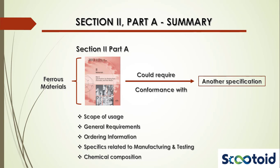Let's quickly summarize what we've learned so far. Part A of Section 2 covers specifications for ferrous materials. A specification in Part A could require conformance with another specification elsewhere. A typical specification will cover scope of usage, general requirements, ordering information, specifics related to manufacturing and testing, and chemical composition. Now that you've seen how to read one specification, you'll be able to read any of the others without difficulty.